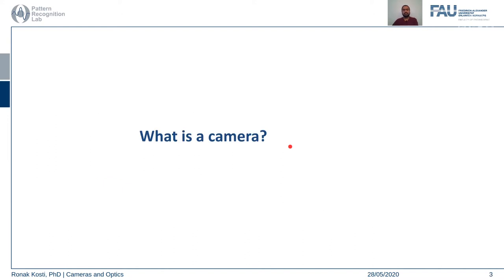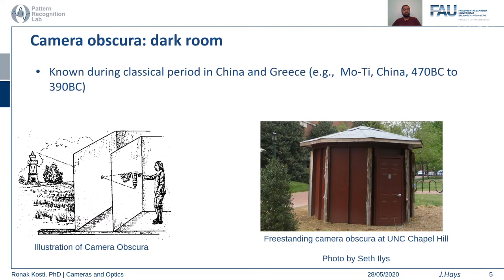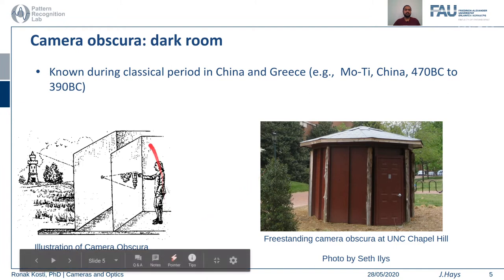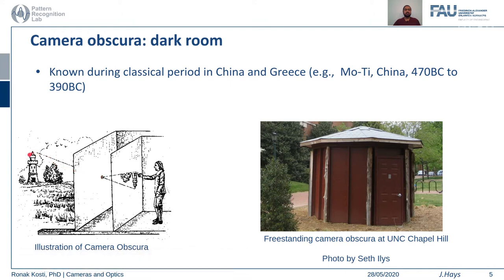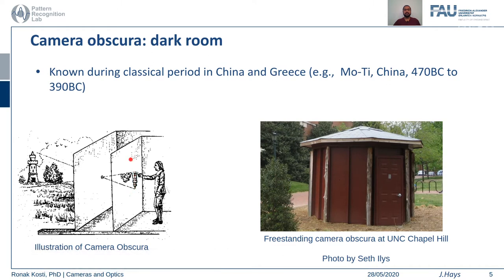The first question that comes to mind is: what is a camera? If you search on Google, camera means a room. This is the oldest available evidence of a camera, called camera obscura. It was essentially a dark room inside a building, and through a hole the light was allowed to pass. There was an image plane where this light was being projected, and a person could see on this image plane — it was a live camera.